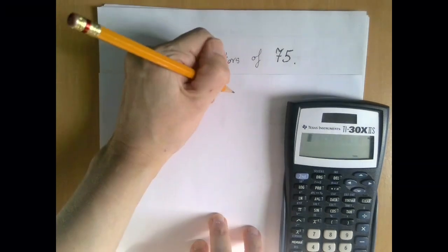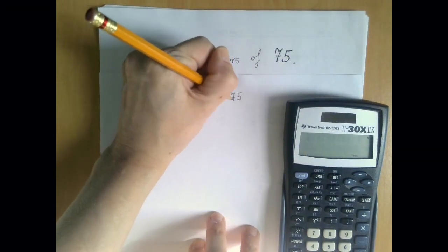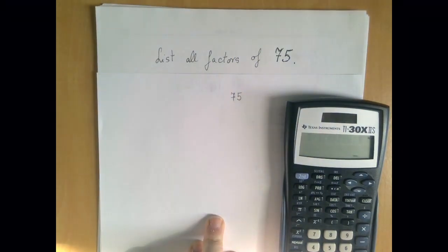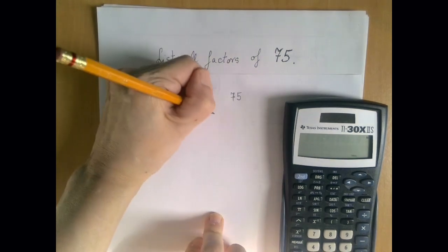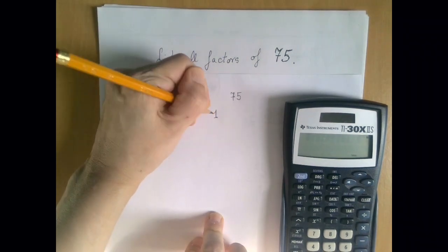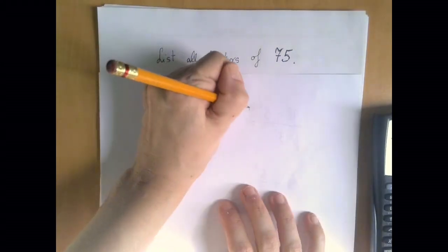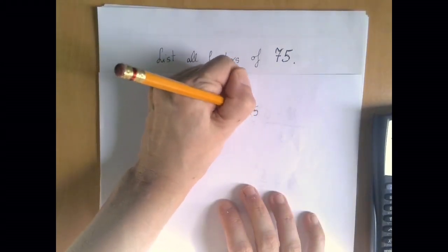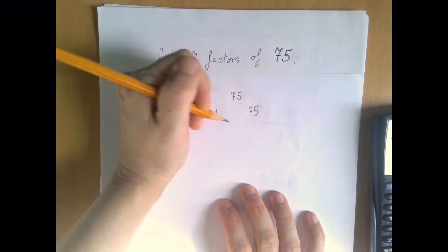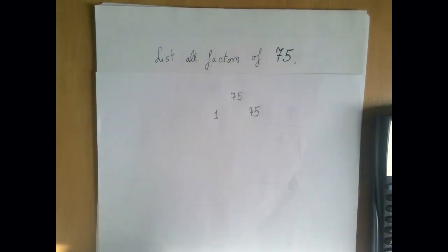First we write down 75 and start counting from 1. 1 is always a factor because we can find a number so that 1 times that number is 75. So 1 and the number itself is a divisor of every whole number. 1 times 75 is 75, therefore these two are factors.